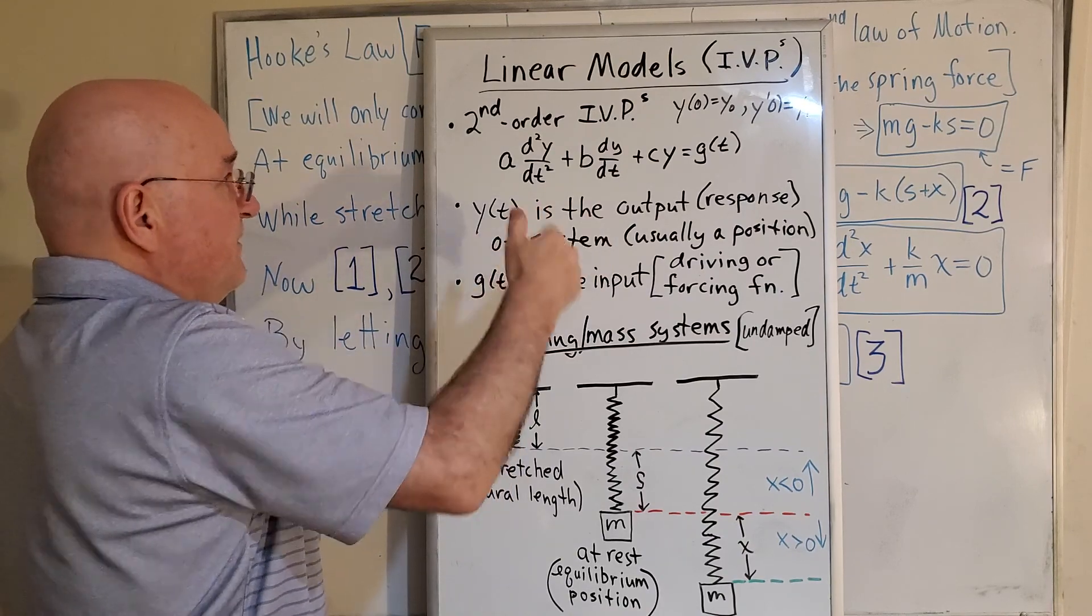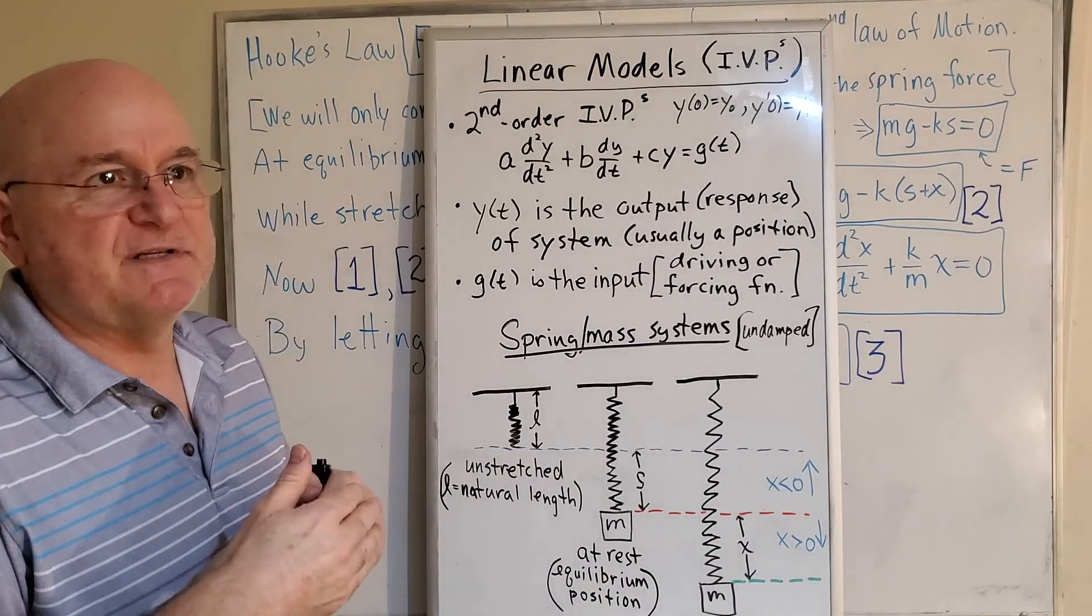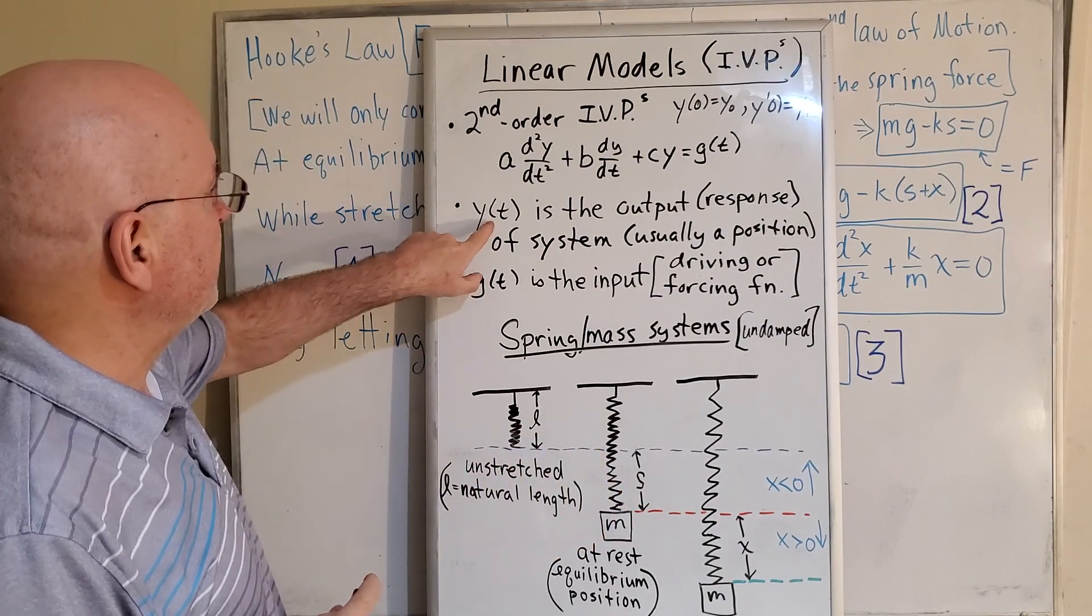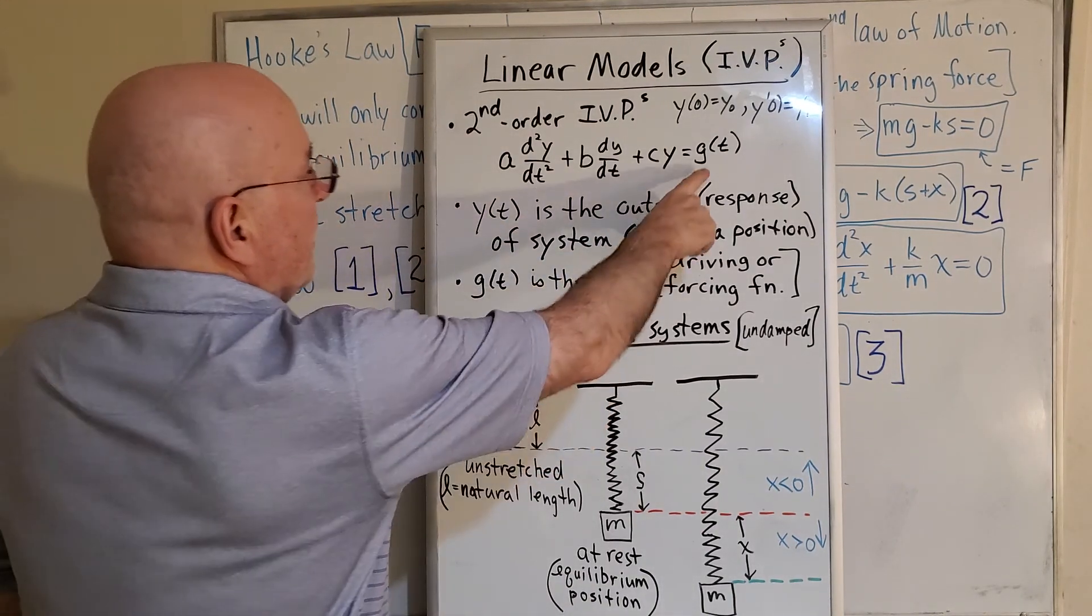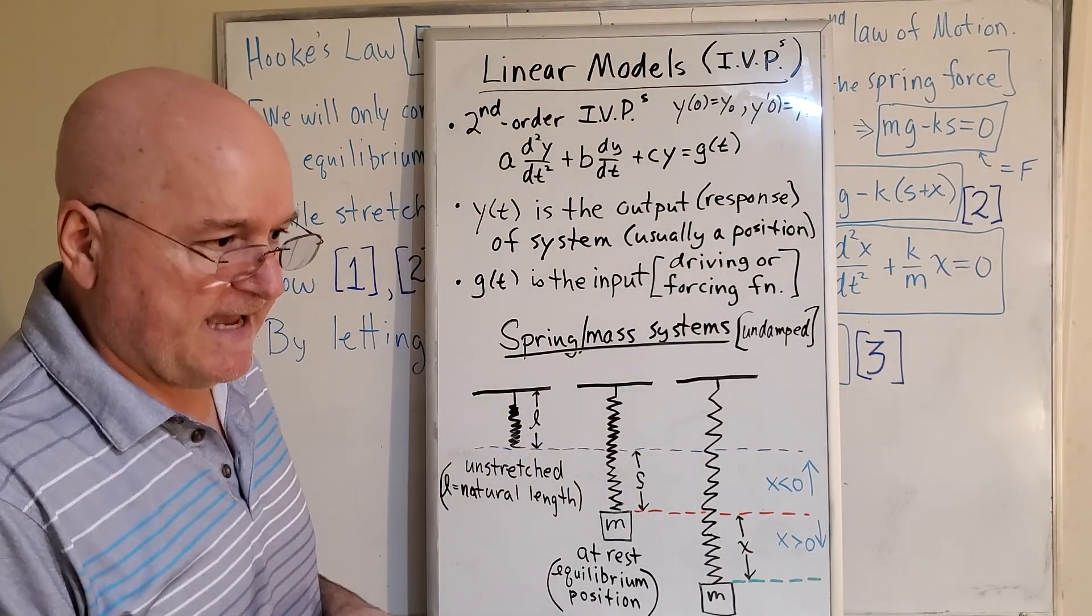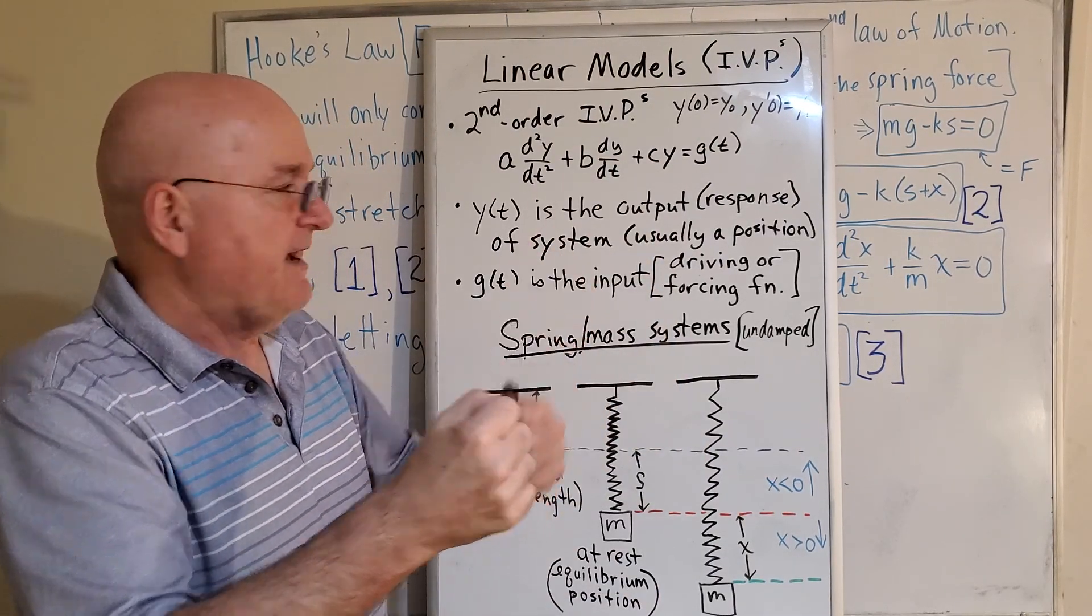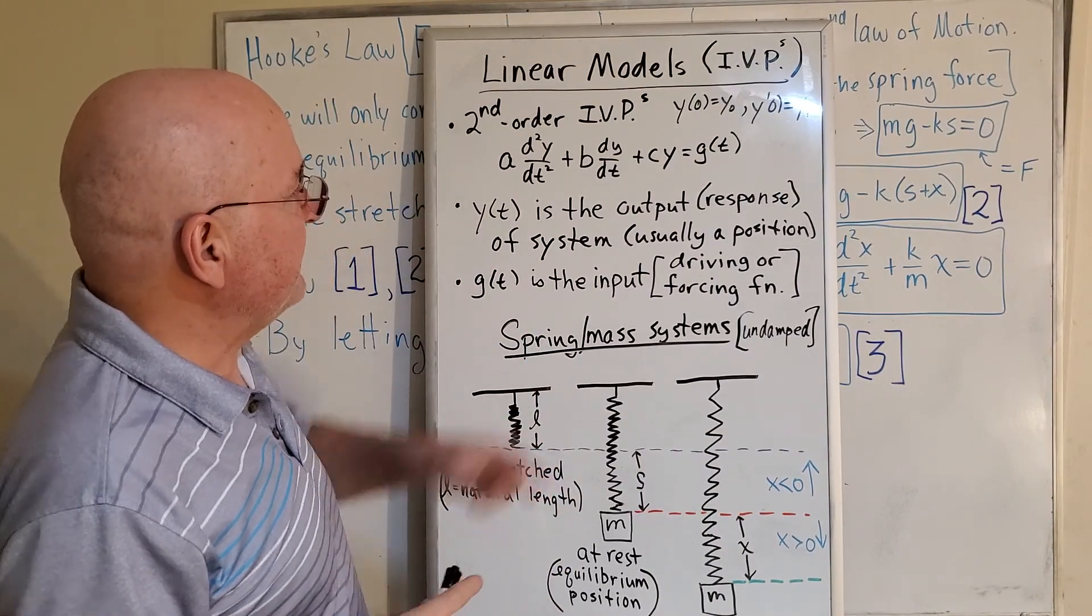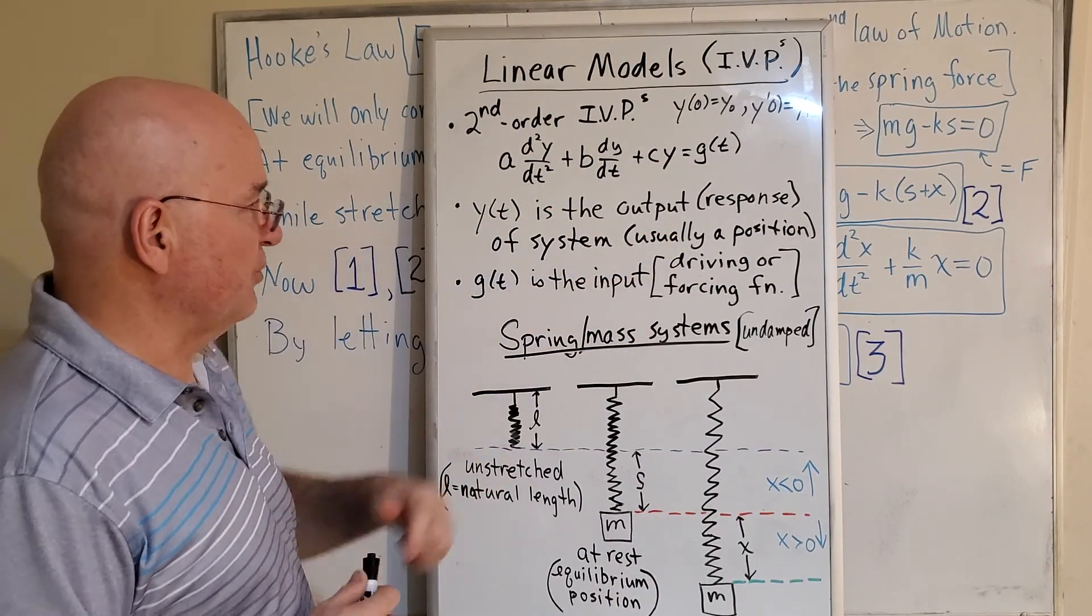Y of t, the solution is called the output or the response of the system, and usually for us, and probably every time, it's going to be the position of the object at a given time. G of t on the right is the input. You could have a spring-mass system going this way or up and down, but you could have an external force that keeps it going forever, and that's what we'll represent with this function, g of t, a driving or forcing function.